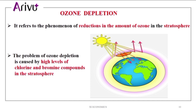This is the stratosphere. On the surface of the earth, the stratosphere contains the ozone layer. The amount of ozone is found in the stratosphere.